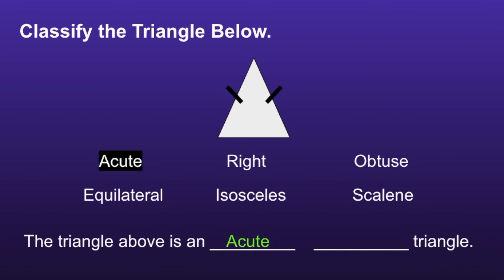Looking at the side lengths, we can see that there are two lines on the sides, which show that those are congruent sides or the same length. Since two of the sides are the same length, this would make this triangle an isosceles triangle. So the triangle above is an acute isosceles triangle.